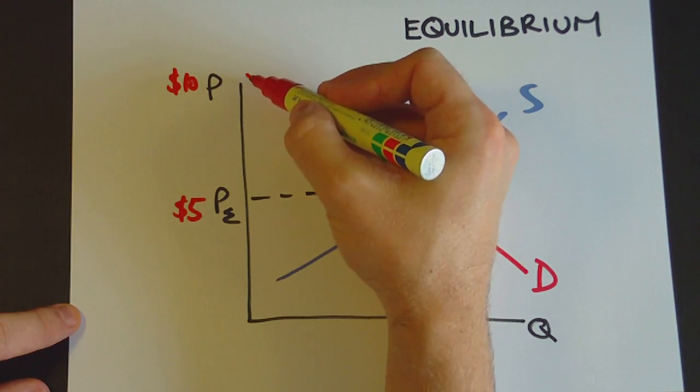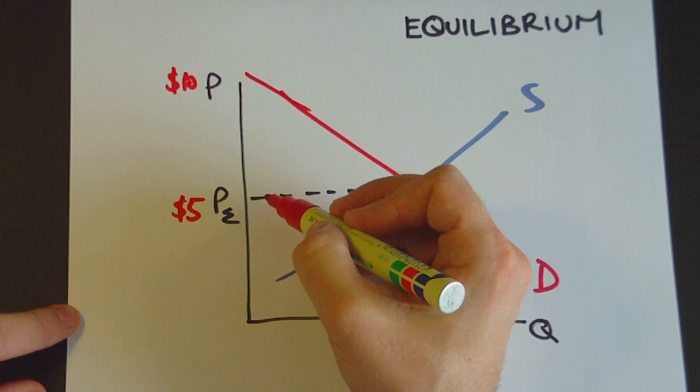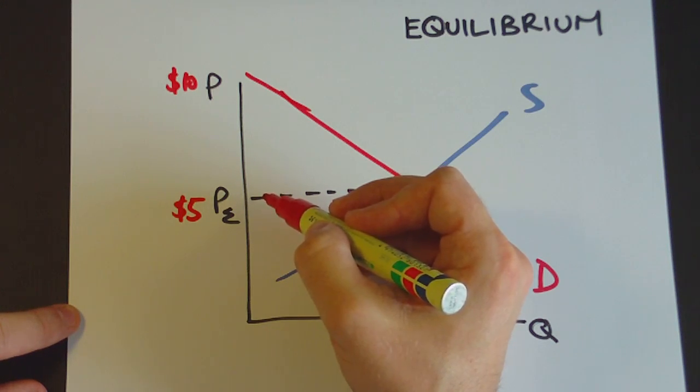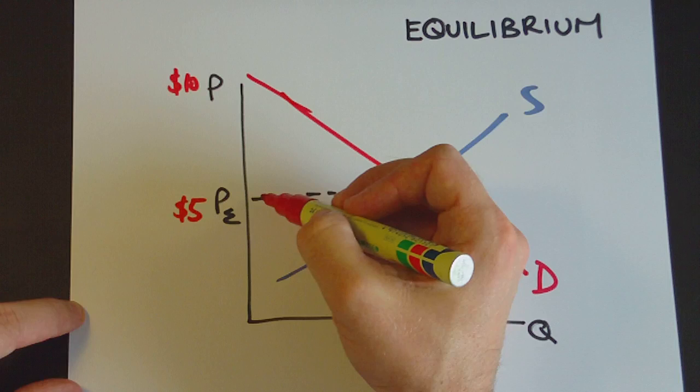So this consumer who is willing to buy it for $10 but goes down to the shop or the markets and finds that the good is only $5 is pretty happy. Because they're willing to pay $10 but only have to pay $5.